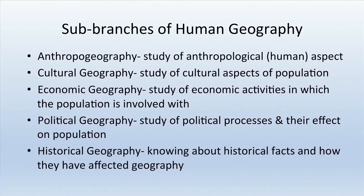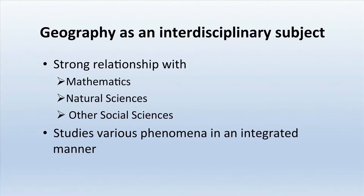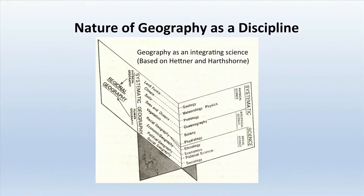The third branch is regional geography, where various aspects are studied depending upon the region. From all these branches it becomes clear that geography is neither purely a social science nor purely a natural science — it is an interdisciplinary subject with strong relationships with mathematics, natural sciences, and social sciences. It studies various phenomena in an integrated manner as a synthesis — a combination of components that form a connected whole.